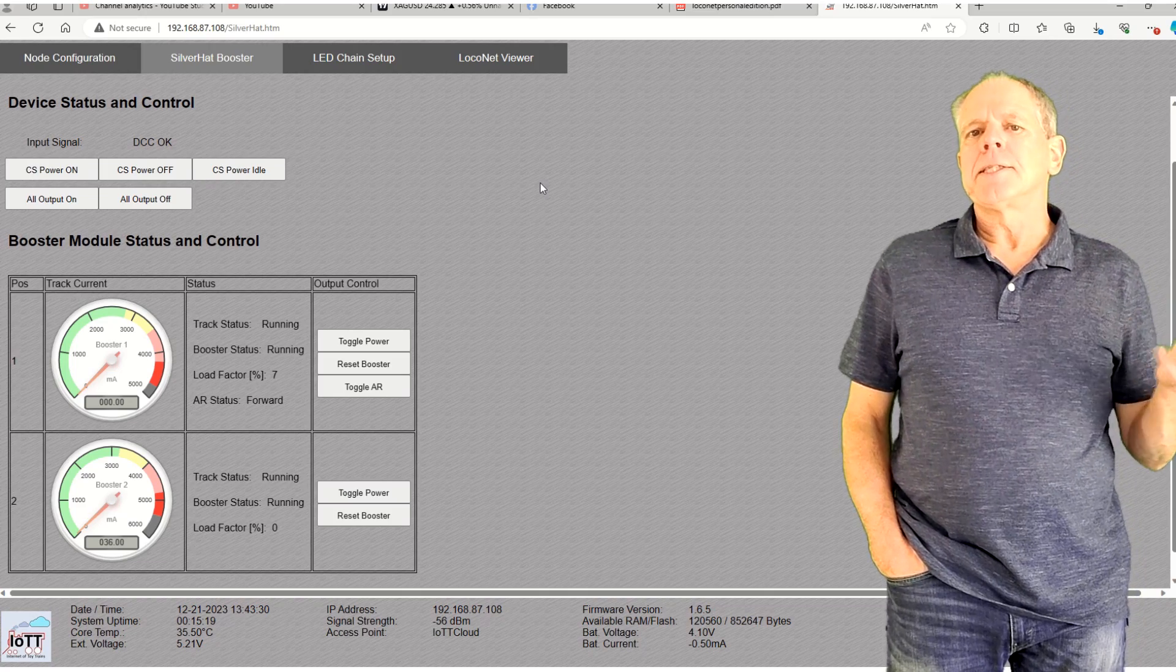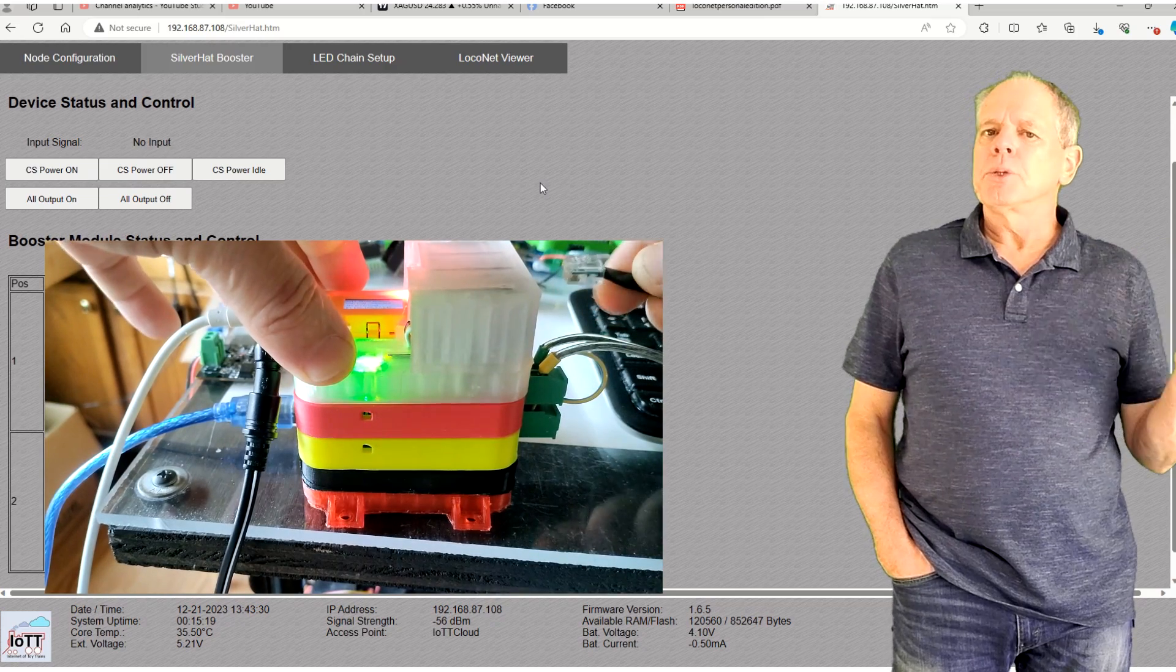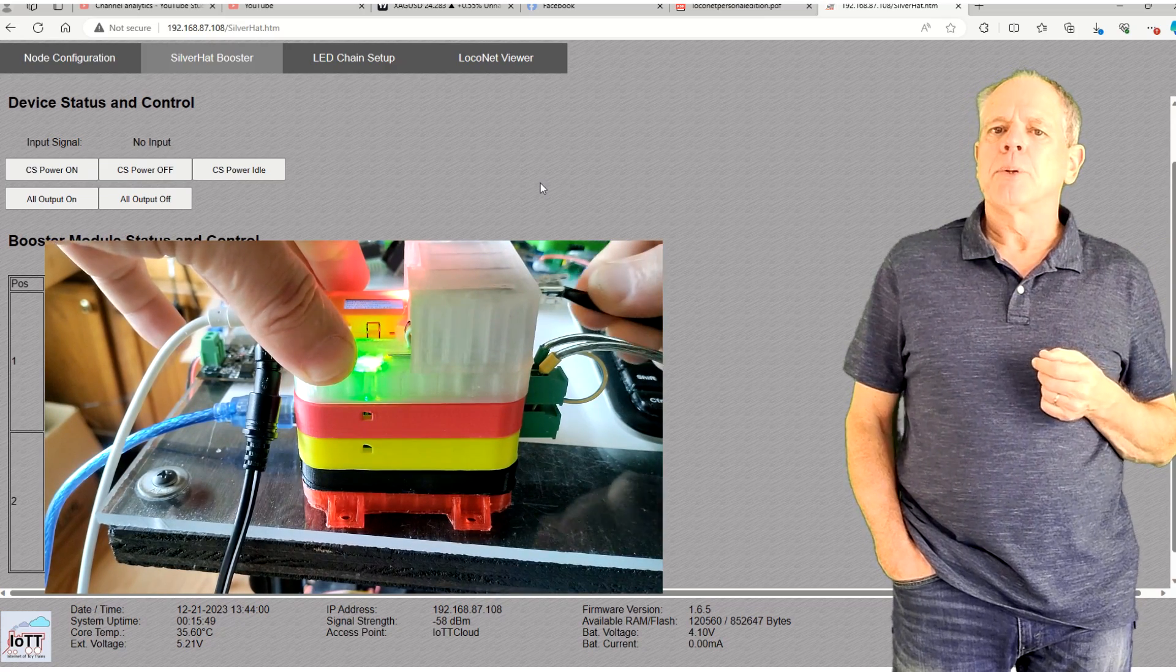The first line displays the quality of the input signal. If you disconnect the DCC input, this will change to no input and the booster shuts down the track outputs immediately.